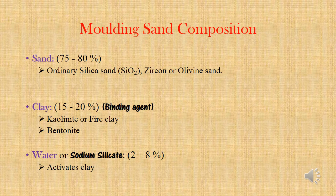First we can see the molding sand composition. There are three basic elements. First is sand, taken at 75 to 80 percent. It is used for getting the required strength of the mold. Mostly we are using ordinary silica sand. Silica enables the molding sand capable of withstanding high temperature, but it has no bond.